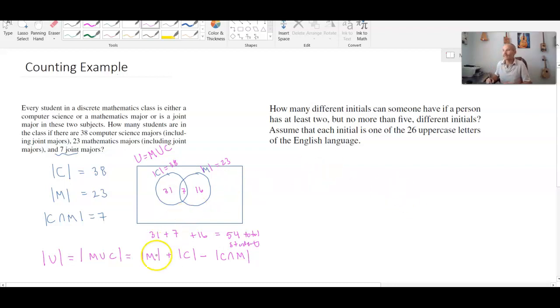If I did 38 plus 23 minus 7, then I should end up getting the same answer. This is going to be 61 minus 7, which is 54, which gives me the same answer.